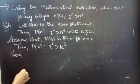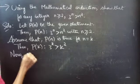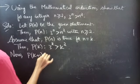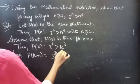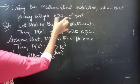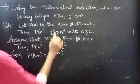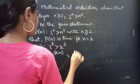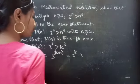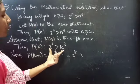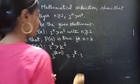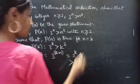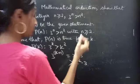Now we will prove for n = k + 1. So let's consider LHS: 3^(k+1) for n = k + 1. You can split this as 3^k × 3. Since we have 3^k > k², this term must be greater than k² × 3.